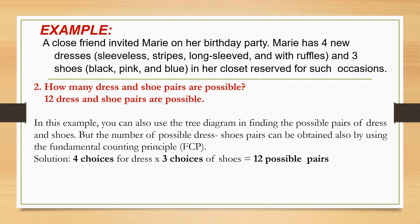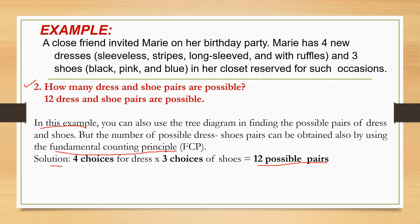We can use another method. How many dress and shoe pairs are possible? 12 dress and shoe pairs are possible. In this example, you can also use the tree diagram in finding the possible pairs of dress and shoes. But the number of possible dress to shoe pairs can also be obtained by using the Fundamental Counting Principle, or FCP. Solution: 4 choices for dress times 3 choices of shoes equals 12 possible pairs. So there are 12 possible pairs for Marie to choose from.